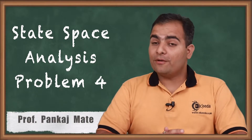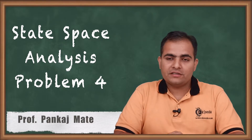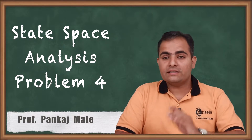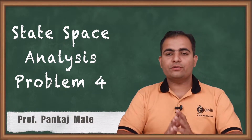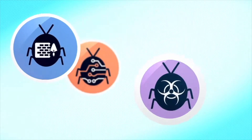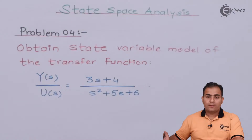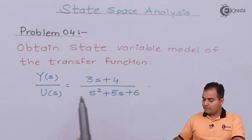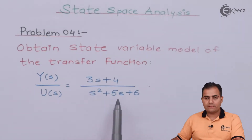Today we are going to study problem number 4, which is based on the state variable model. A transfer function is given and using that transfer function we are going to obtain the state variable model — that is, the input state variable equation and output state variable equation. The transfer function is Y(s)/U(s) = (3s + 4) / (s² + 5s + 6).